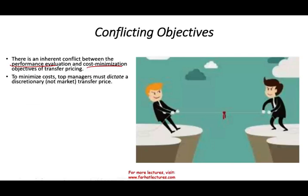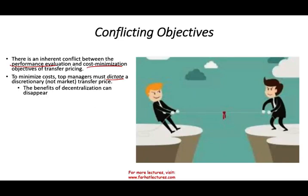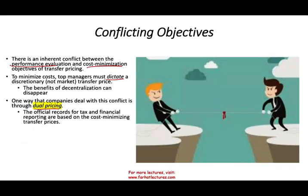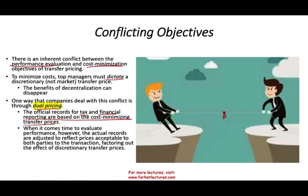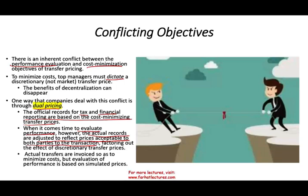To minimize cost, top managers must dictate a discretionary transfer price, but this causes the benefit of decentralization to disappear. One solution companies can employ is dual pricing — keeping two sets of records. The official records for tax and financial reporting are based on cost minimization transfer prices. But when it comes to evaluating performance, the actual records are adjusted to reflect prices acceptable to both parties, factoring out the effect of discretionary prices. So for tax purposes you use discretionary prices, but for evaluating managers you use market prices.